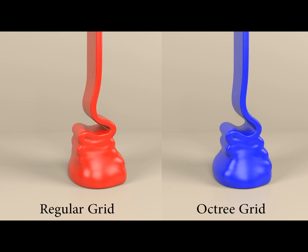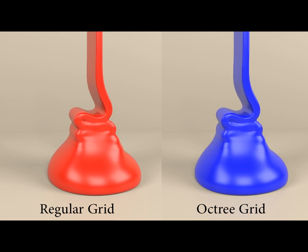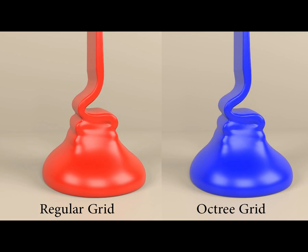Here we consider the familiar viscous buckling phenomenon. Our method closely matches the regular grid while being 3.5x faster.